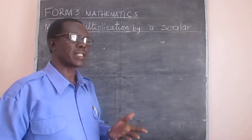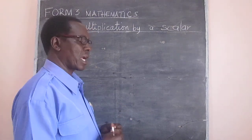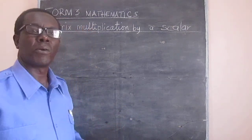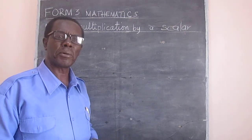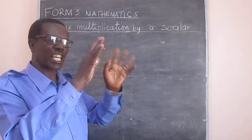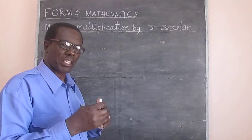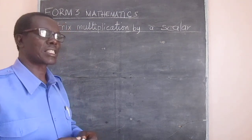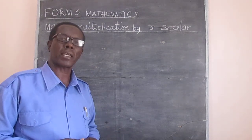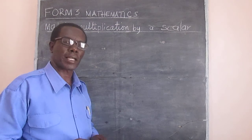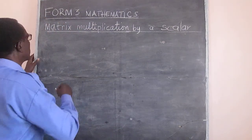A scalar is a constant. We have our first example. We are going to look at the general way of doing it. When you are given a matrix, how do you multiply that matrix by a scalar? So we have this matrix here.